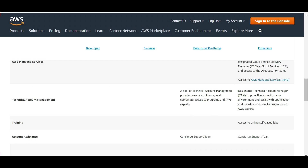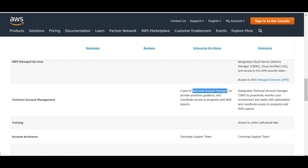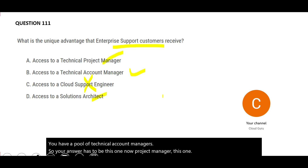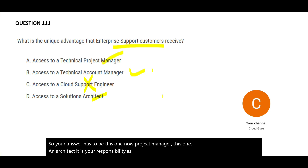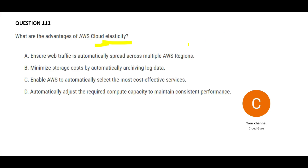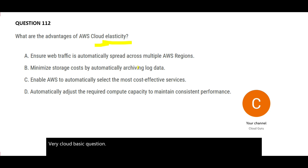The unique feature is technical account management. Both enterprise and enterprise on-ramp have a pool of technical account managers. Note that roles like project manager and architect are your responsibility as a client — AWS will not provide those roles. That is the final answer.